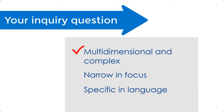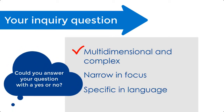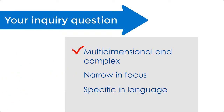A really easy way to measure that is to ask: could you answer your question with a yes or no answer? If so, then it is probably not multidimensional and complex enough. You're going to want to have a couple of different elements you're taking a look at. At the same time, when you do that, it helps make the question narrow and focused as well.